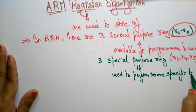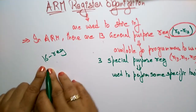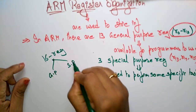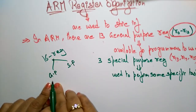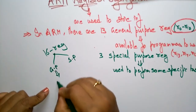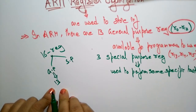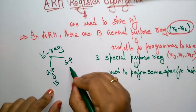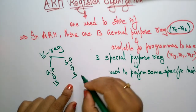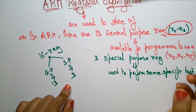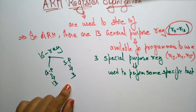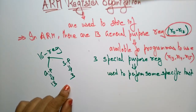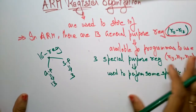So in total there are 16 registers, divided into general purpose and special purpose. Out of these 16, 13 are general purpose registers — R0 to R12 — which any programmer can use to write programs. The three special purpose registers — R13, R14, and R15 — perform only specific tasks and are not directly used by programmers.